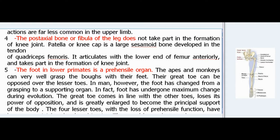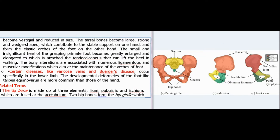Fifth, the foot in lower primates is a prehensile organ—apes and monkeys can very well grasp the boughs with their feet, and their great toe can be opposed over the lesser toes. In man, however, the foot has changed from a grasping to a supporting organ. The great toe comes in line with the other toes, loses its power of opposition, and is greatly enlarged to become the principal support of the body. The four lesser toes, with the loss of prehensile function, have become vestigial and reduced in size. The tarsal bones become large, strong, and wedge-shaped.